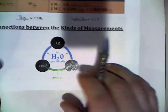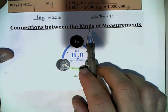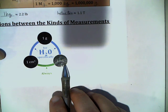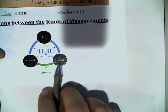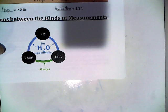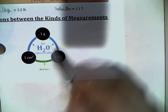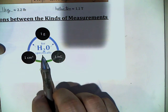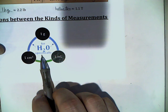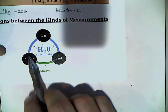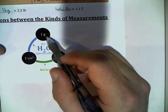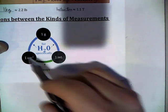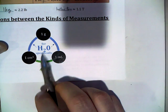This little chart is a visual showing the connections between kinds of measurements. One gram, one cubic centimeter, and one milliliter are always in a one-to-one-to-one relationship. One cubic centimeter always equals one milliliter regardless of substance — that's always true. However, the connection to one gram applies specifically to water (H₂O). If you move to a different substance with more or less density than water, that gram connection may no longer hold.